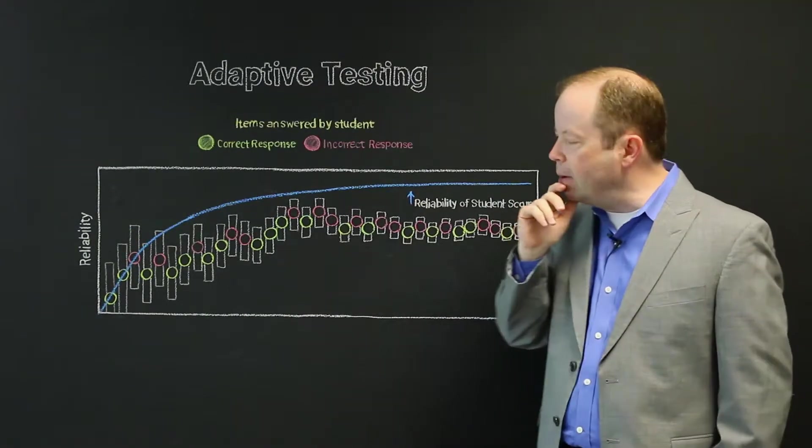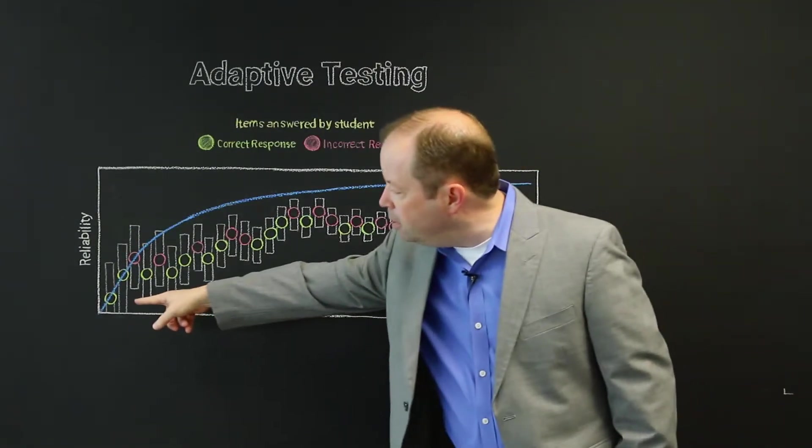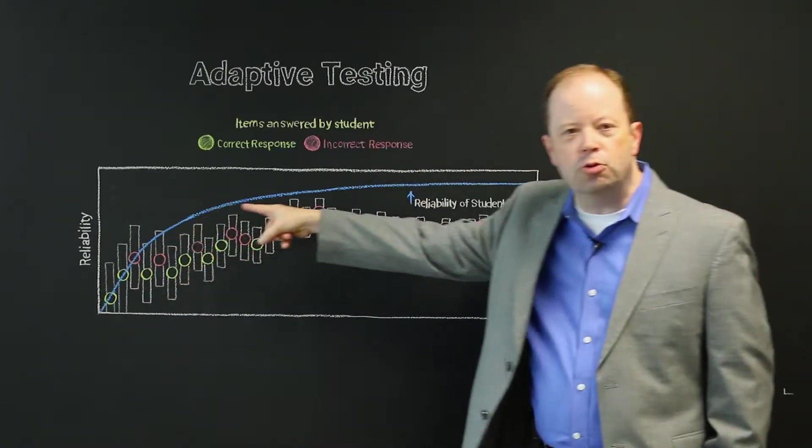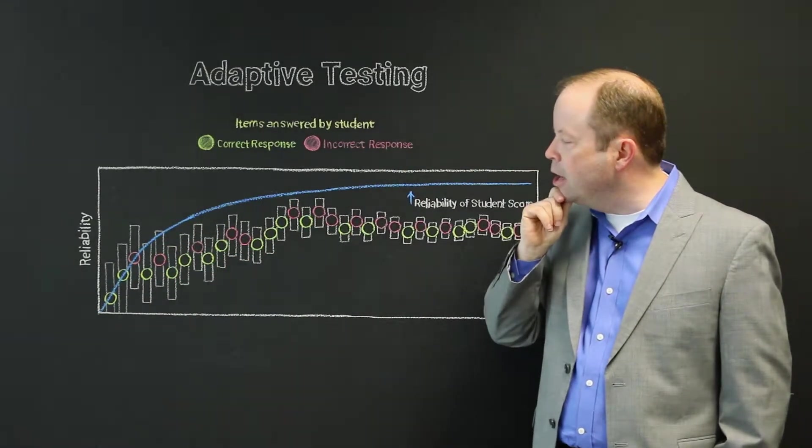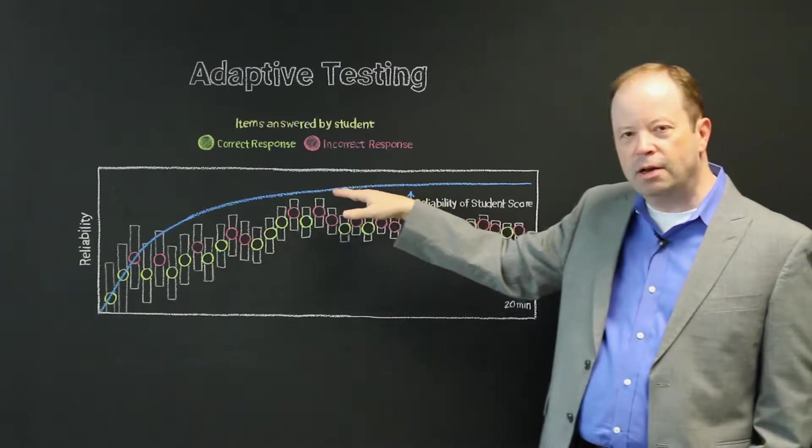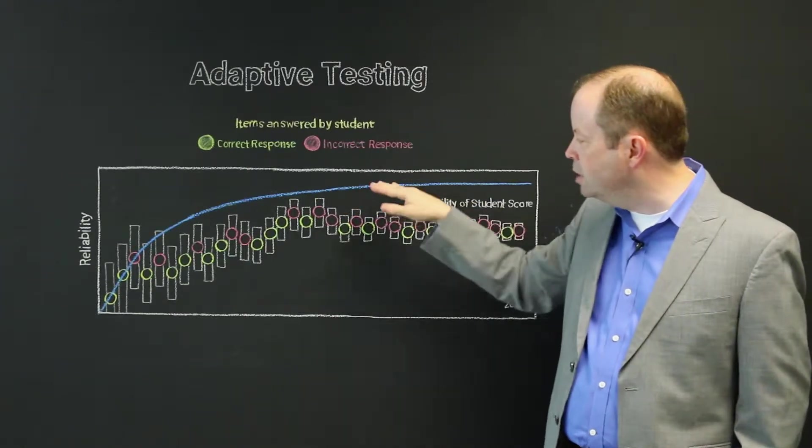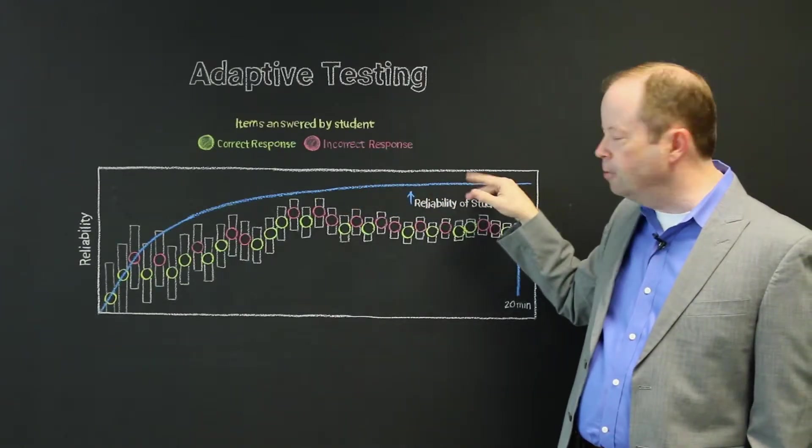is that reliability rises very drastically as the test starts taking place, and then over time, the rate of rise begins to decline somewhat, and then there somewhat becomes a plateau.